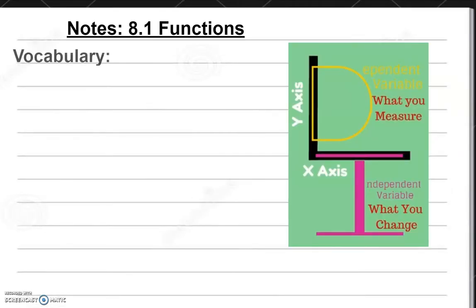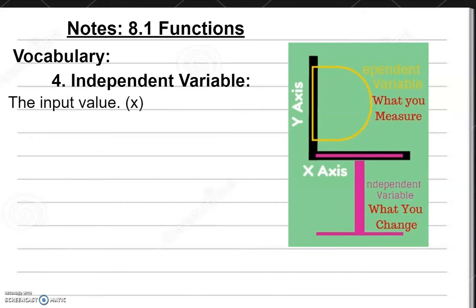Now we have more vocabulary terms. Number four is the independent variable. The independent variable is the input value — that's your X. The X value is on the X axis, which goes horizontally from left to right. That's the independent variable; that's what you can change. It's independent — just think about it as an independent number.